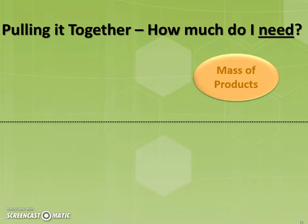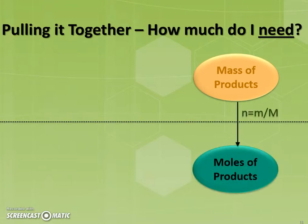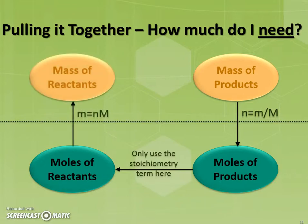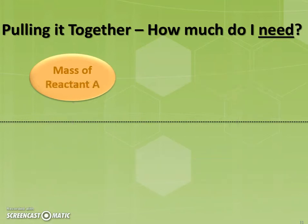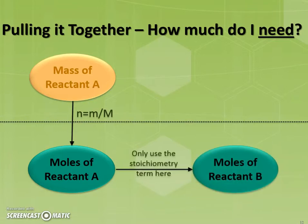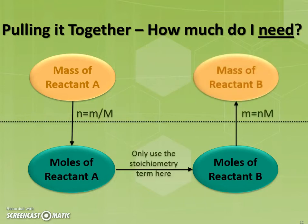The exact same kind of process applies when given a mass of product that you need: how many grams of reactants do you put in? First, take your mass of product and convert it to moles of product. Apply the stoichiometry term to find the number of moles of each reactant you need. Then, using the molar mass, convert that to mass of reactants. For the third question — how much reactant B do you need given a mass of reactant A — calculate the number of moles of reactant A, apply the stoichiometry term to calculate the moles of reactant B, then use the molar mass of reactant B to calculate the mass of reactant B that you need to measure out.